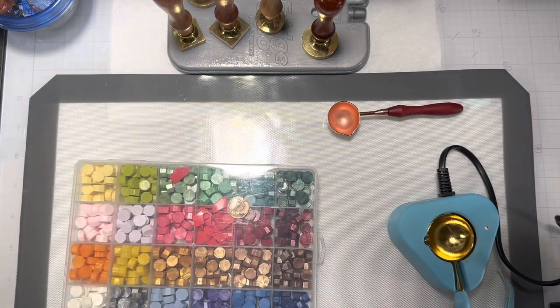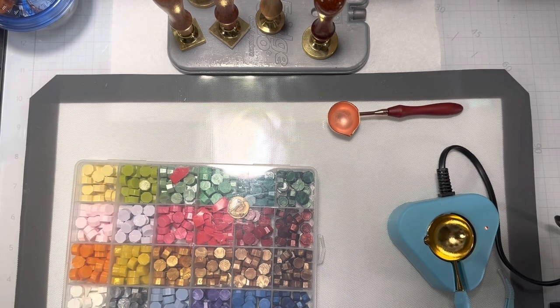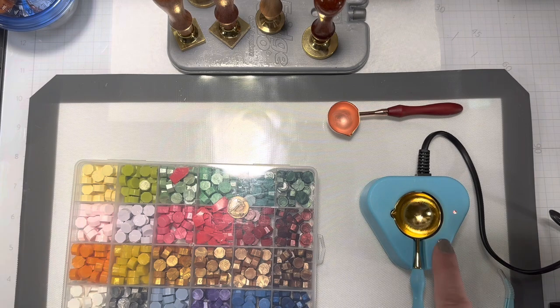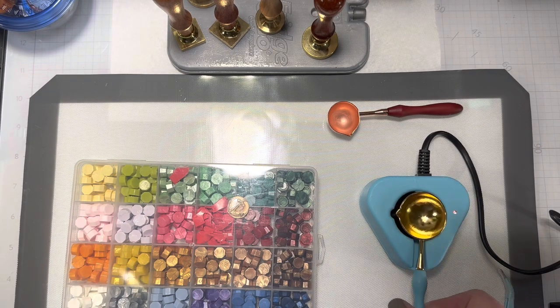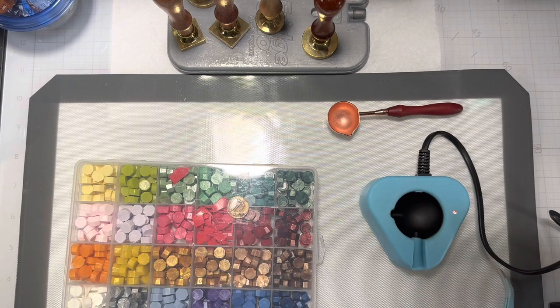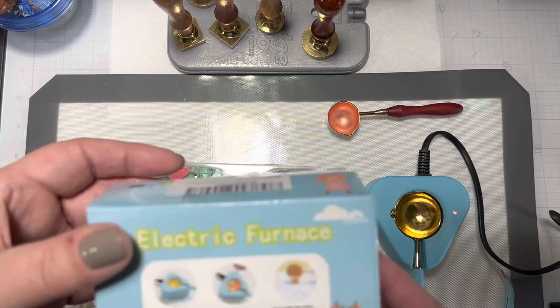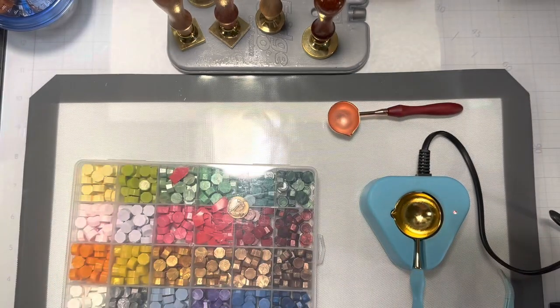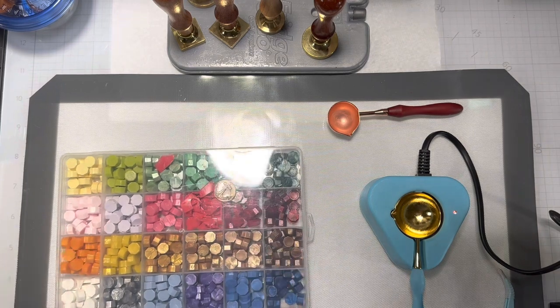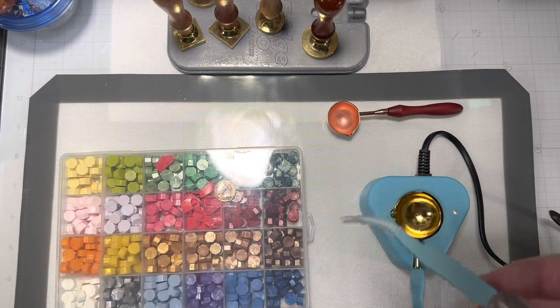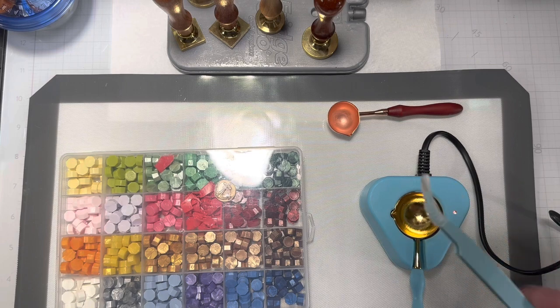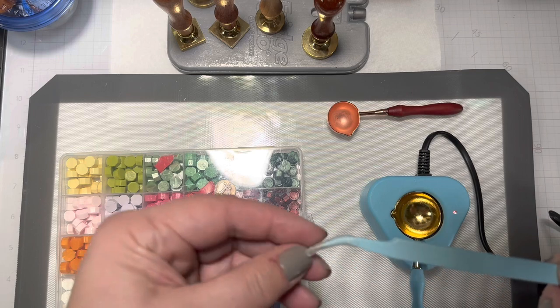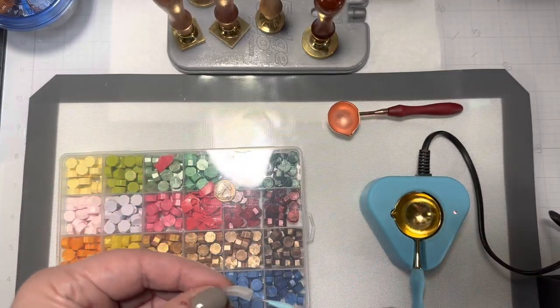I found this little wax melting gadget on Amazon and they call it an electric furnace. It's kind of a funny name. I wanted to try this out before I shared it with you. It comes with a spoon, has a long cord that plugs into an outlet, has an on-off switch and a light indicator to tell you when it's heated to the correct melting temperature. This is great because it keeps consistent temperature and the wax will not burn. It also came with tweezers, the spoon that you see in the well, and a spatula to help clean out the spoon reservoir when you're finished.